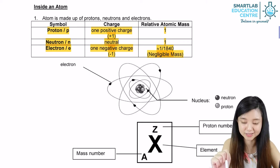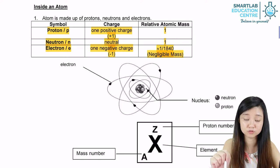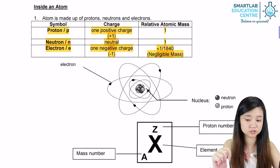For electrons, they have a negative charge and their atomic mass is actually 1 over 1840, which is really small, so we call it negligible mass.